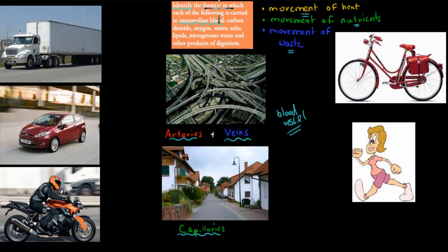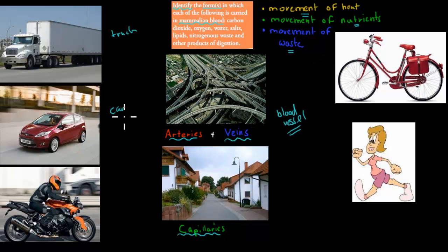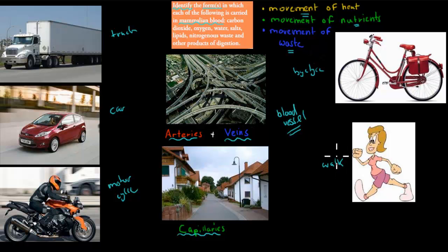When it comes to the dot point — identify the forms — the blood vessels are like our highways and streets, and the forms that things move in is like what kind of transport they use to get to places. Do they use a truck, a car, a motorcycle, a bicycle, or do they walk? These are all different forms they could be transported in, and each product named can have different forms.